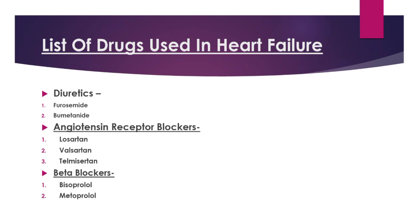Next is angiotensin receptor blockers. Examples of drugs are losartan and valsartan. These drugs block the angiotensin 2 receptor, which mainly constricts the blood vessels and leads to high blood pressure. By blocking the angiotensin 2 receptor, blood pressure is reduced.